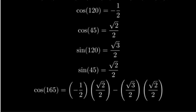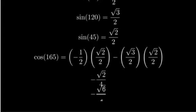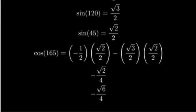Now, let's simplify the first term. Negative one half times square root of 2 over 2 equals negative square root of 2 over 4. And square root of 3 over 2 times square root of 2 over 2 equals square root of 6 over 4.